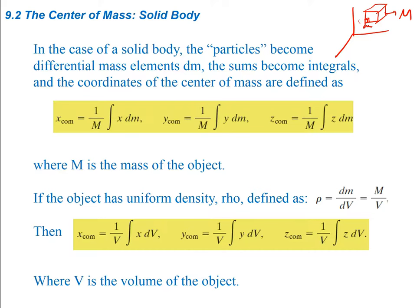The coordinates of the center of mass can be defined as: instead of just adding components, we take the integral of all differential mass elements times whatever the position of that element is, and do that for each x, y, and z. So we have 1 over M times the integral of x times dm for x_com, and the same for each of the other components. Here big M is the total mass of the object.